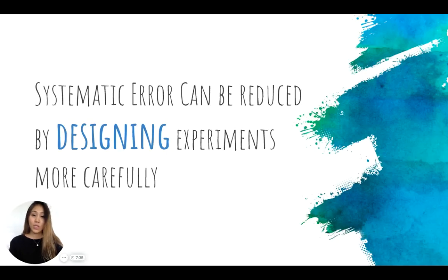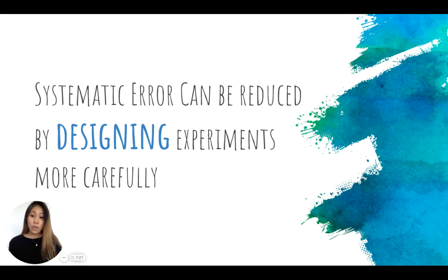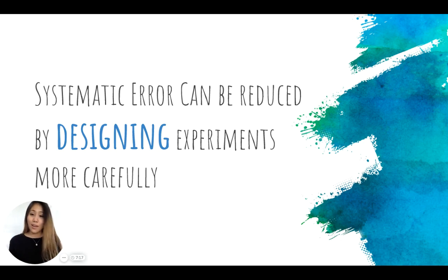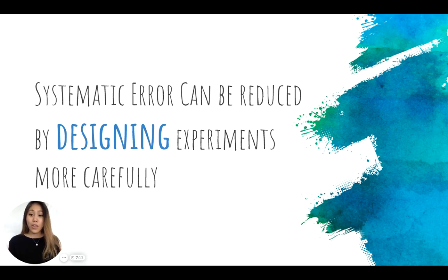Systematic errors can be reduced by designing experiments more carefully. This means really looking at the selection of different types of equipment and the different uncertainties associated with each one. By designing experiments more carefully, you can reduce systematic error and increase your accuracy.